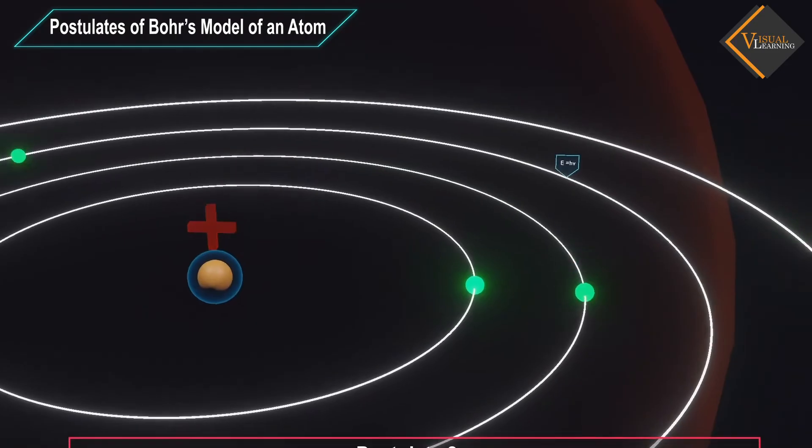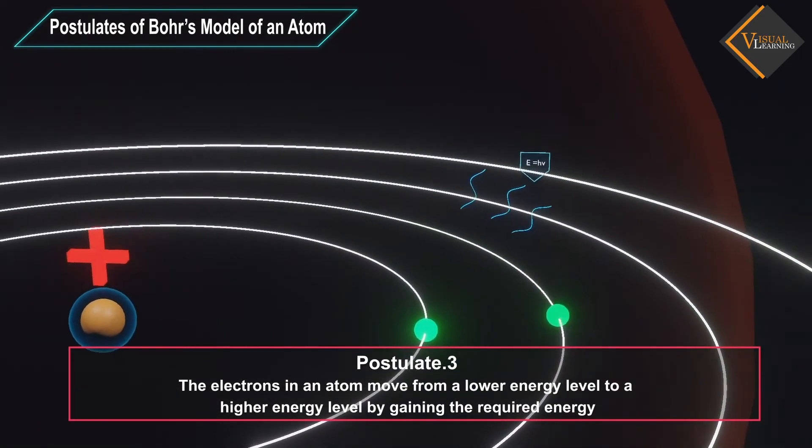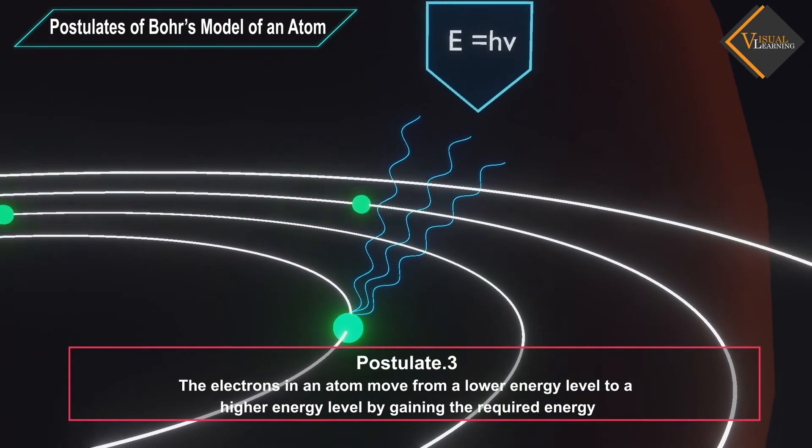The electrons in an atom move from a lower energy level to a higher energy level by gaining the required energy.